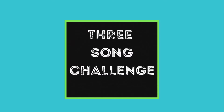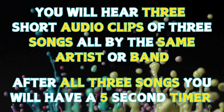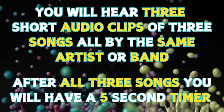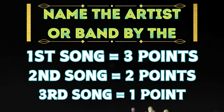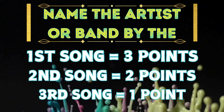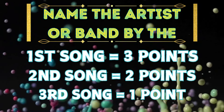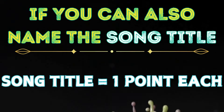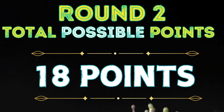Total possible points for Round 1 is 16. Round 2: 3 Song Challenge. In this round you will hear 3 short audio clips of 3 different songs all by the same artist or band. After all 3 songs you will have a 5 second timer. If you could name the artist or band by the first song, give yourself 3 points; the second song, 2 points; or by the third song, 1 point. Do this for each of the 3 challenges in this round. If you could also name the song titles, award yourself 1 point for each that you knew. Total possible round points is 18.